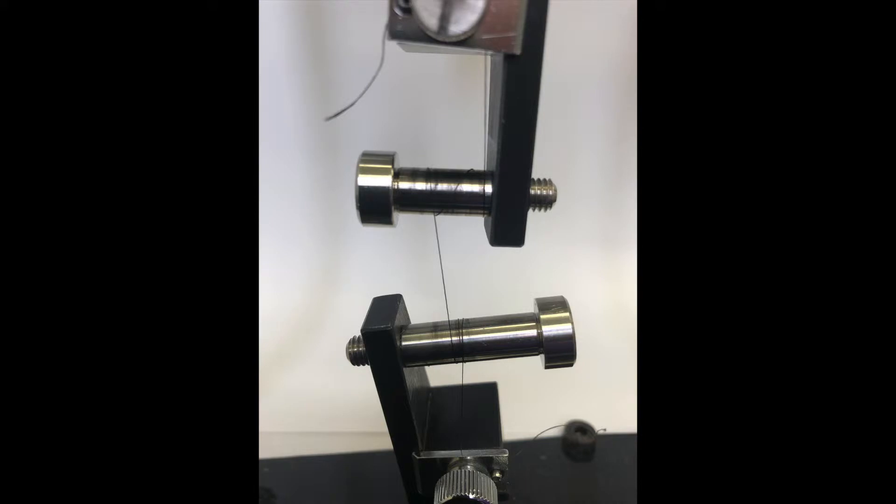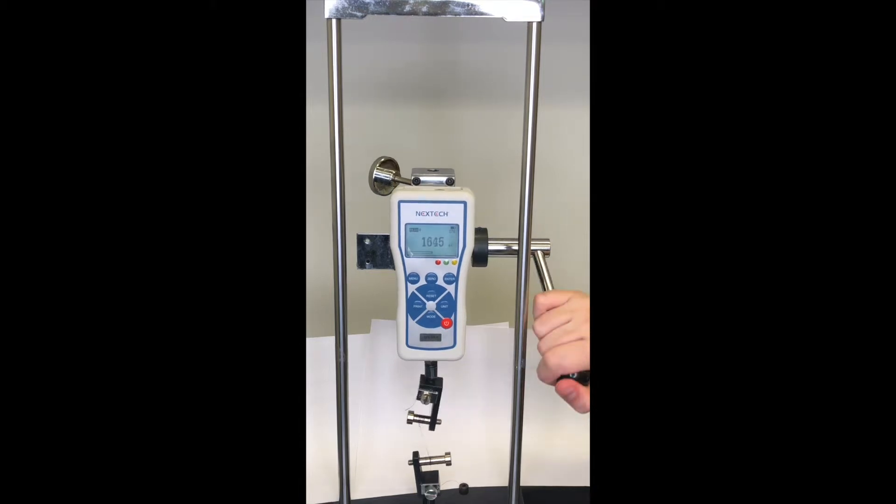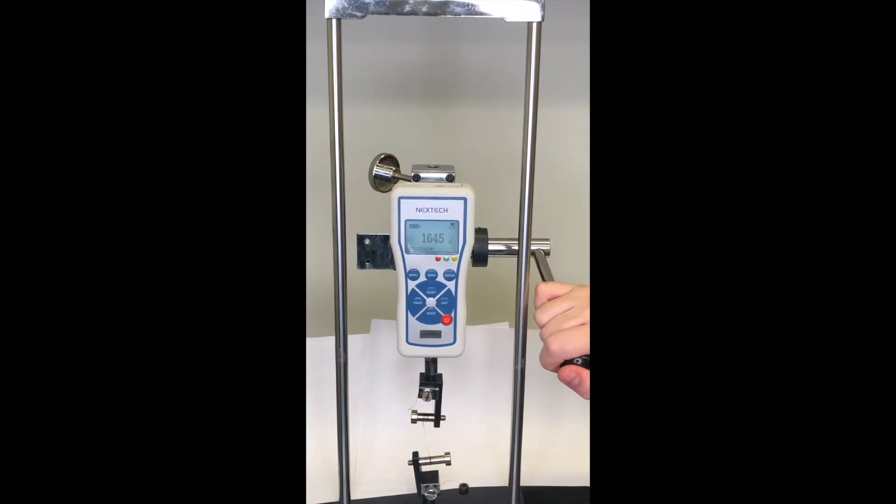I'm going to show you a tensile test performed on a section of this yarn that's secured between two clamps and wrapped around these two posts. The yarn can sustain 1.64 kilograms of force, which gives this particular piece a strength of 1 gigapascal.